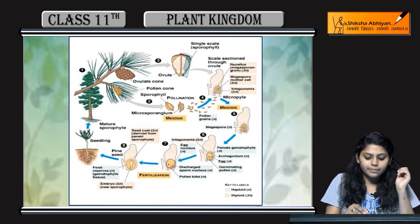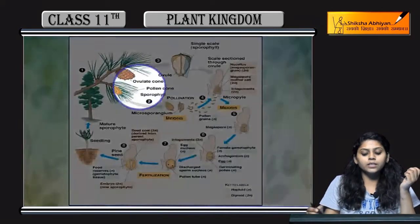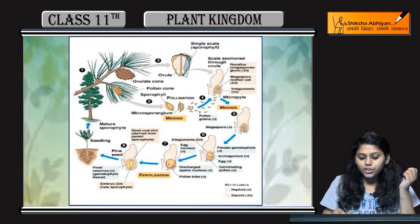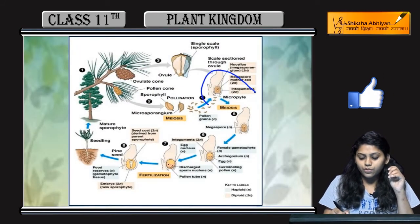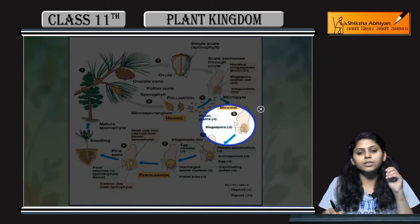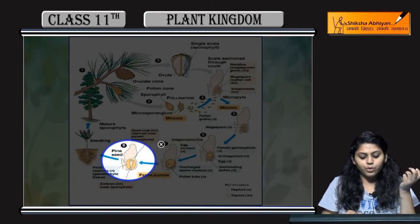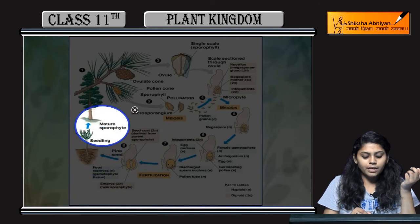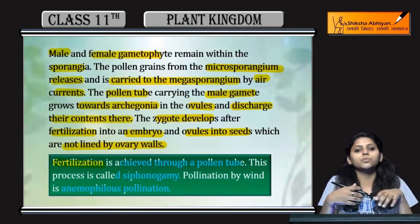Let's look at the diagram. Mature sporophyte ovulate cone and pollen cone produce karega. Pollination hogi — pollen grains disperse karenge. Microsporophyll disperse karenge megaspores ke paas. Then nuclei fuse karenge, embryo ya zygote form karega. Then seedling banega and mature sporophyte produce hoga. Ye hai life cycle of gymnosperm.